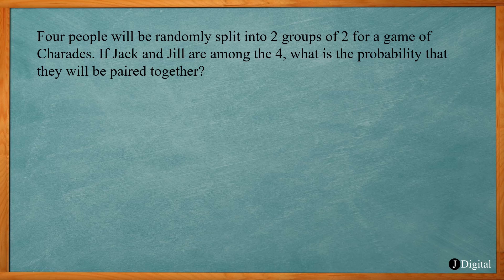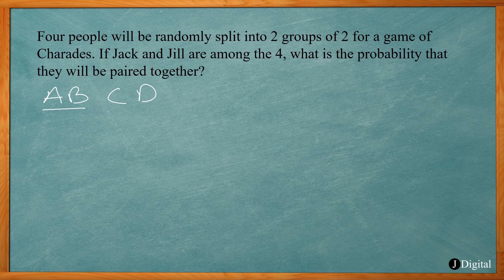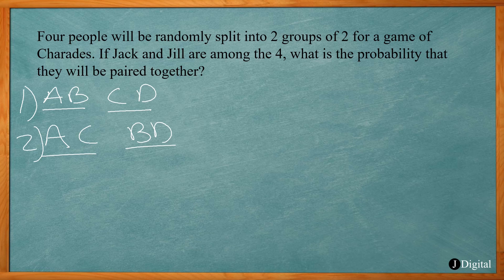The second problem: four people will be randomly split into two groups of two for a game of charades. If Jack and Jill are among the four, what is the probability that they will be paired together? We need to figure out all possible groupings. Calling the four people A, B, C, and D: we can have AB and CD, AC and BD, or AD and BC — those are all the possible groupings.